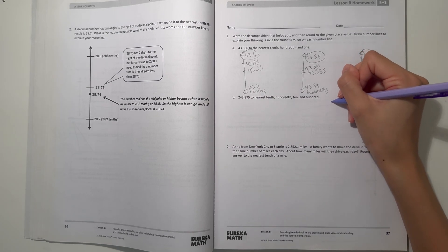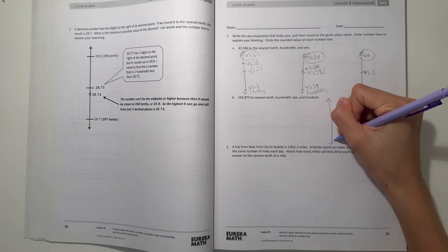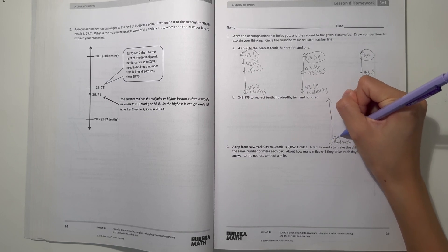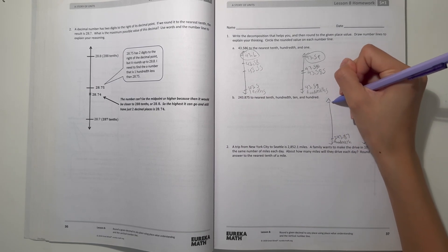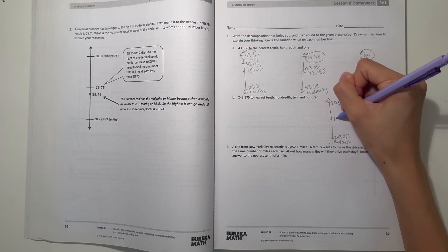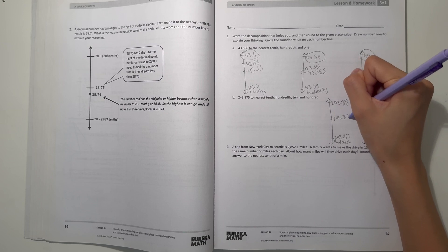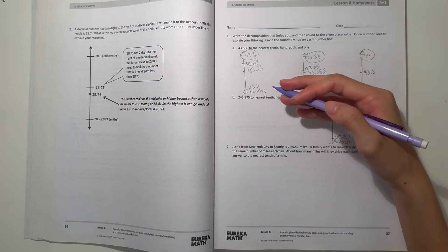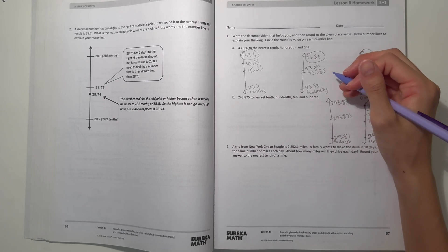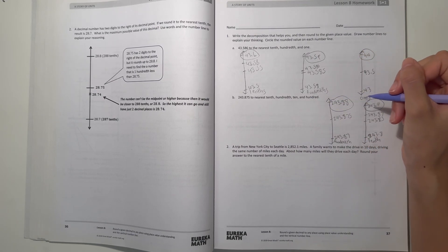Alright, and then now we have our tenths done. Let's do our hundredth. So here we have 243.87, and it's in between 243.88. So our midpoint would be 243.875. So we have 243.875, so that's exactly in the middle. And everything five and up, we round up. So this would round up to 243.88.